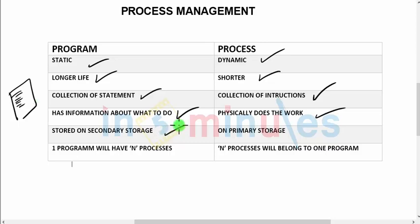A program is stored on secondary storage — a kind of permanent storage, which can be a disk drive most of the time. Whereas a process, on the other hand, is stored on primary storage, that is the RAM. As the last point: one program is broken into n processes, whereas n processes may belong to a single program.